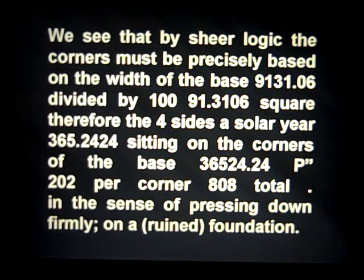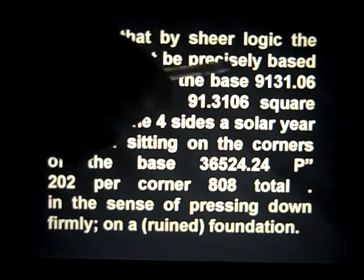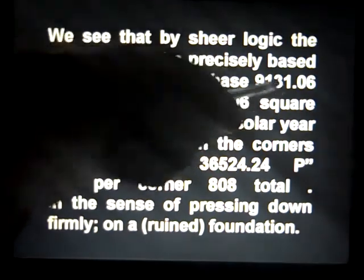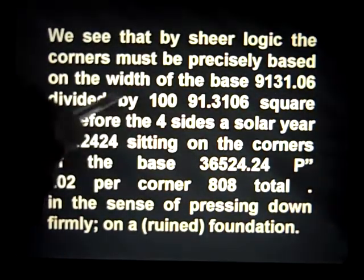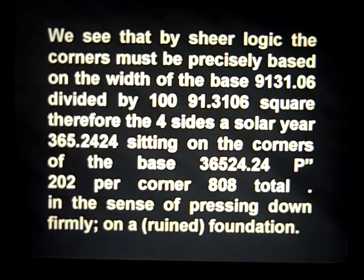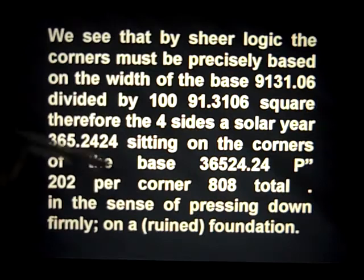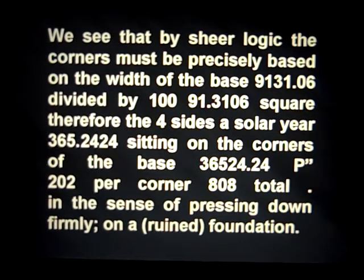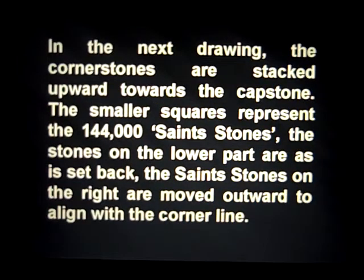By sheer logic, the corners must be precisely based on the width of the base. The base of the pyramid itself is 9131.06 divided by 100, which is the base of the cornerstone square. Therefore each one of the four sides of the cornerstones is a solar year of 365.2424, sitting on the corners of the base of 36,524.24. Again, 202 per corner and 818 total.